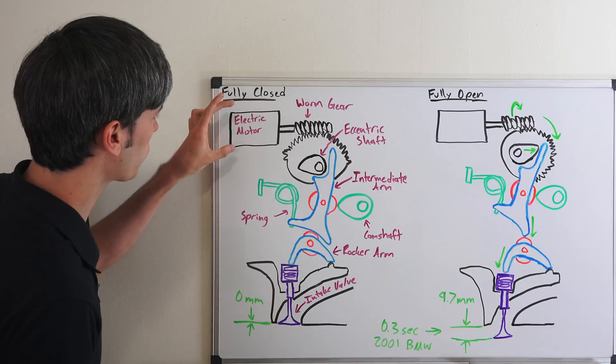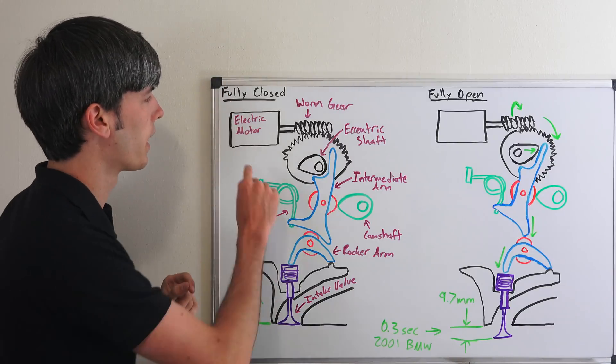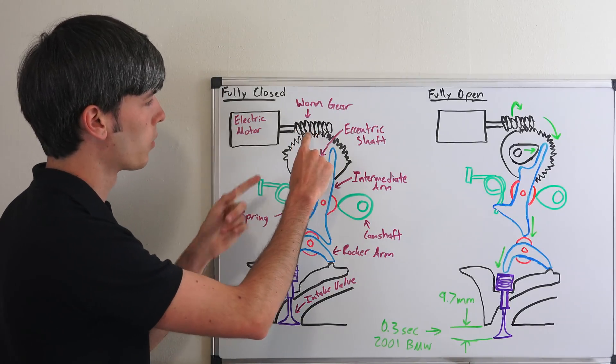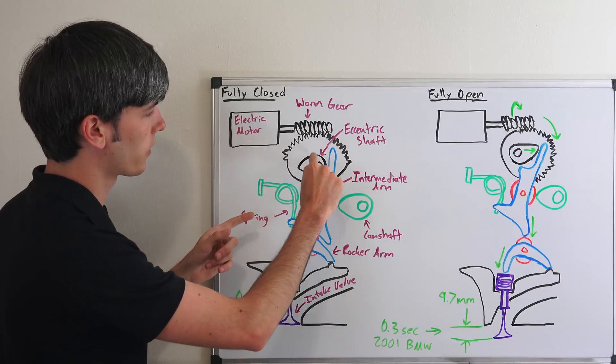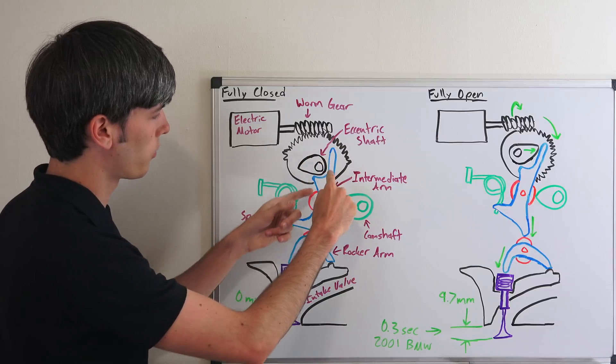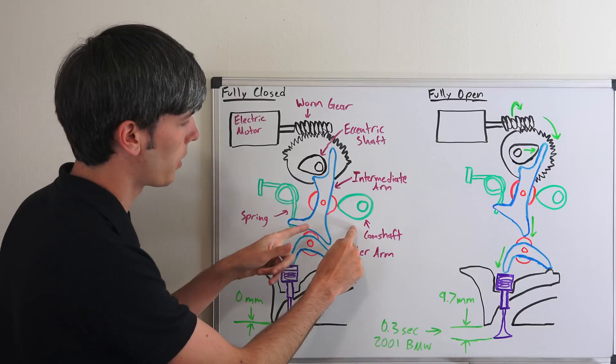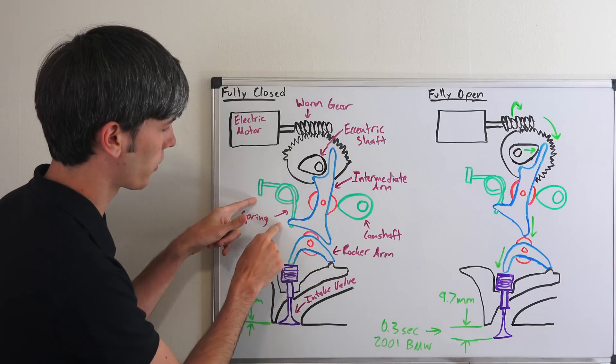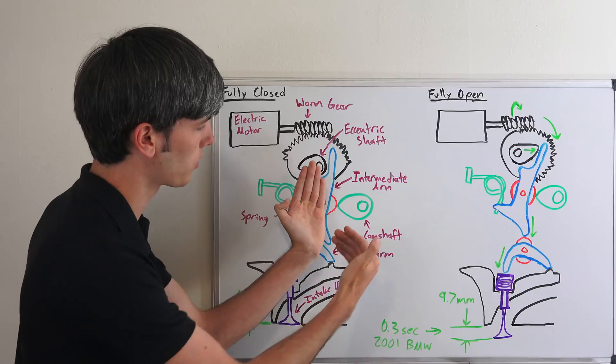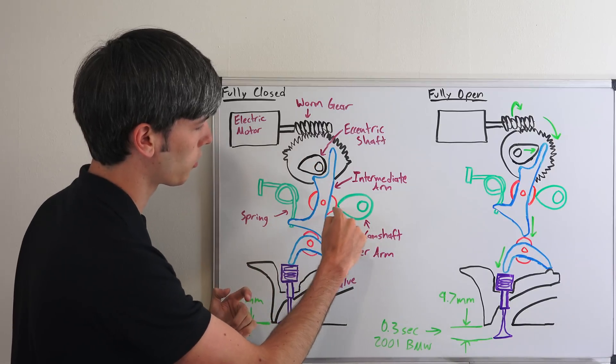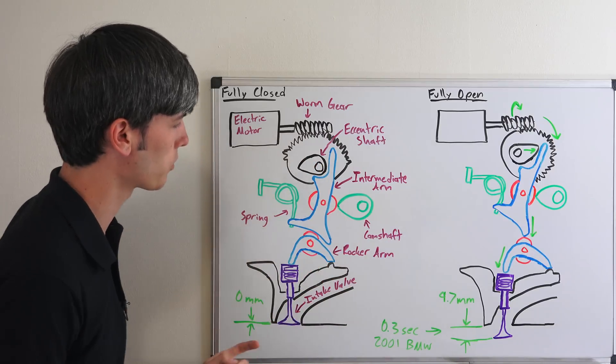What's happening is we have an electric motor up top attached to a worm gear, which can rotate this eccentric shaft. You can see it has this profile here which will follow along on this intermediate shaft. The intermediate shaft is acted upon by the camshaft - it has a spring forcing it into that camshaft, and then with this roller, it will follow the pattern of the camshaft.